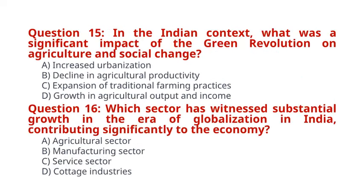Question 15. In the Indian context, what was the significant impact of the Green Revolution on agriculture and social change? A. Increased urbanization. B. Decline in agricultural productivity. C. Expansion of traditional farming practices. D. Growth in agricultural output and income. The correct answer for question 15 is option D: Growth in agricultural output and income.